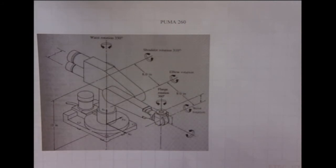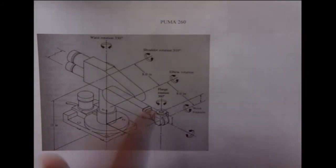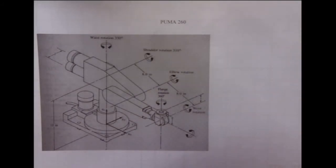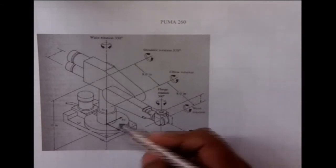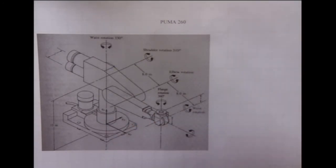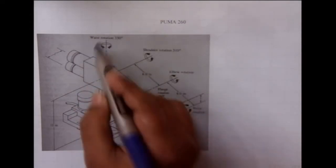You take care of the signs of the link correctly, and the directions of measurement I have specified should be followed. Next, flip over to the next sheet where you have the drawing of the PUMA robot, and we will try to assign coordinate frames online. In this case, z_0, y_0, and x_0 are already assigned, so z_0 goes along the first axis. This is what is called the waist rotation.